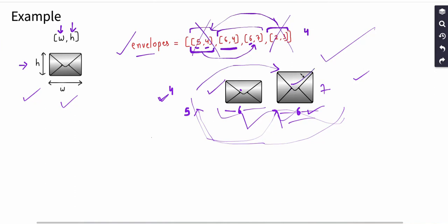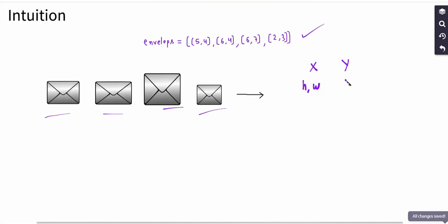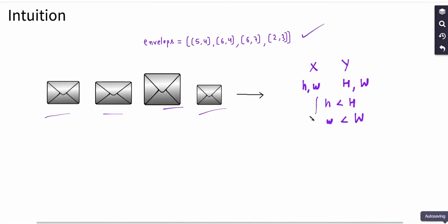So the third envelope holds the other two envelopes pushed inside it. Now let's see the intuition to solve this problem. For any two envelopes, we can push envelope X inside envelope Y if the height and width of X are strictly smaller than the height and width of Y. The strategy is simple: sort this envelope array in increasing order of width.